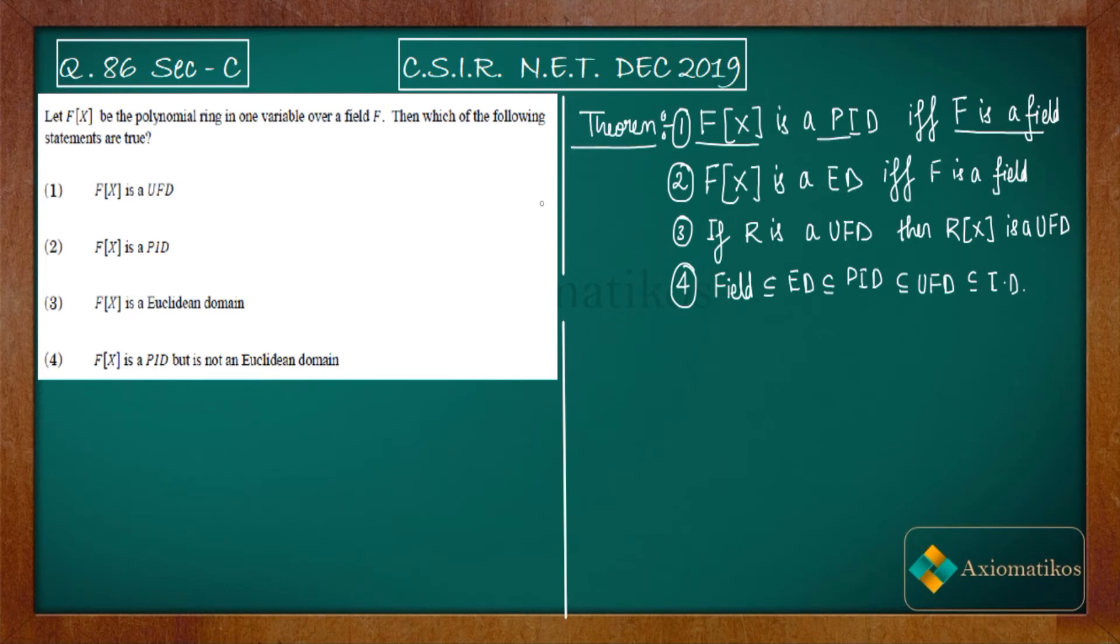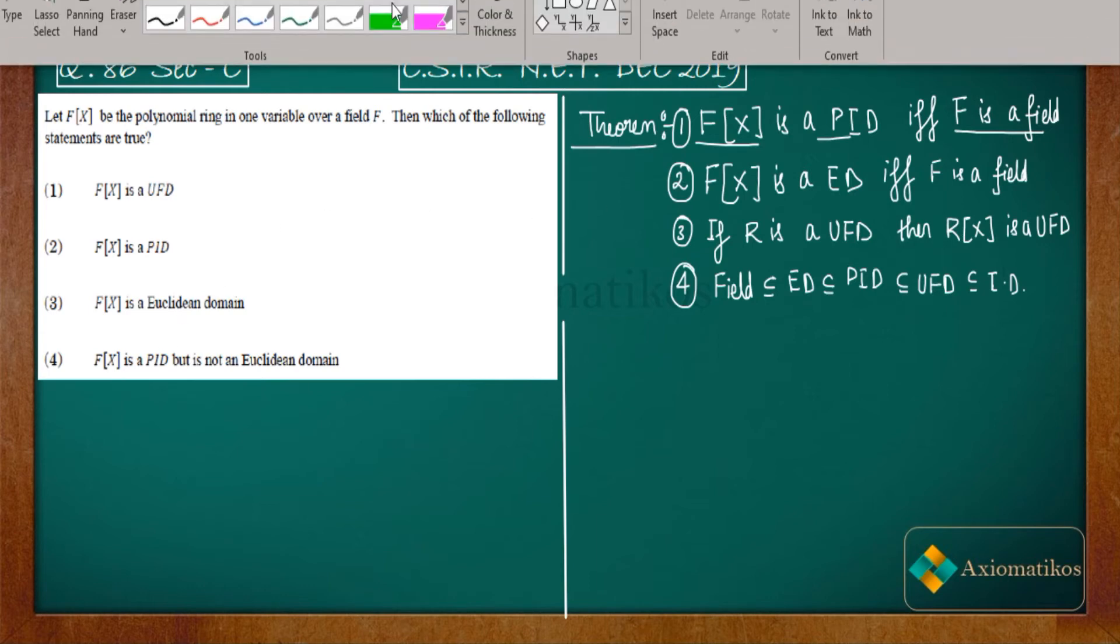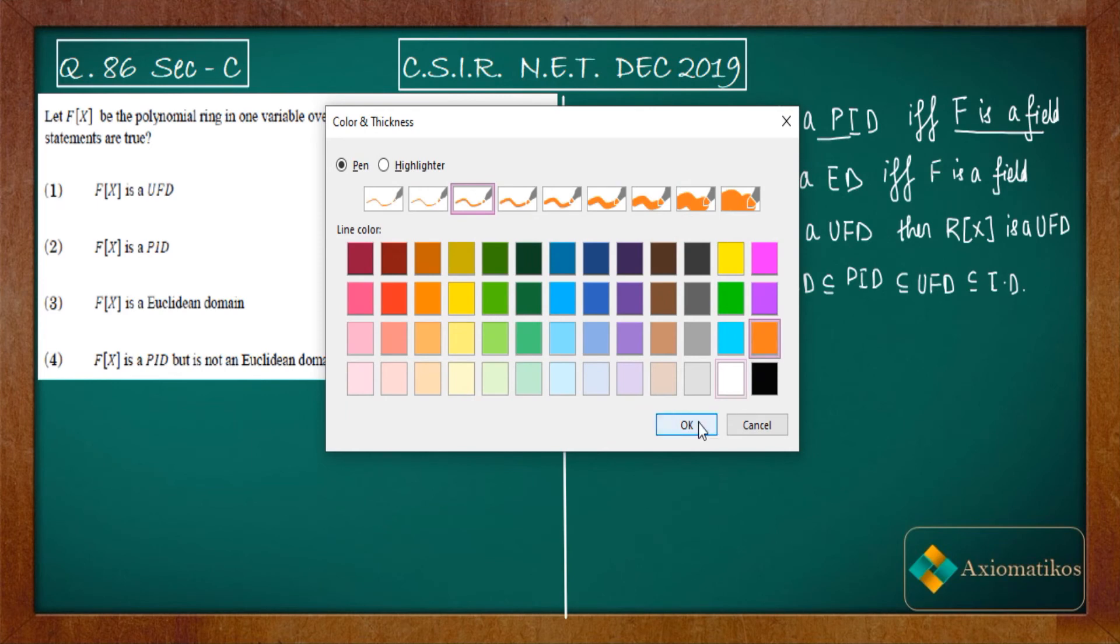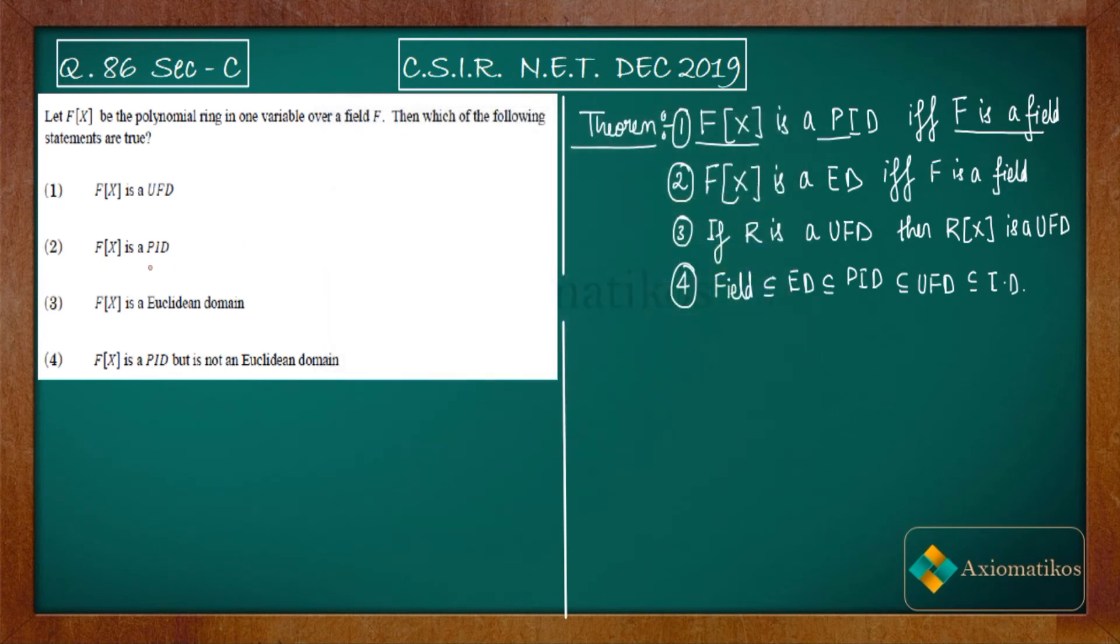a Euclidean domain. According to theorems one and two, we can say that f(x) is a PID - we can say it from theorem number one. It is correct because f is a field. f(x) is a Euclidean domain - we can do it from theorem number two. From theorem two this is true, from theorem one this is true.